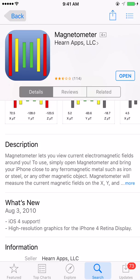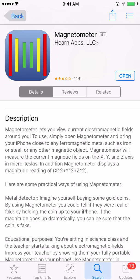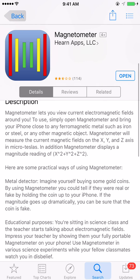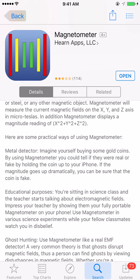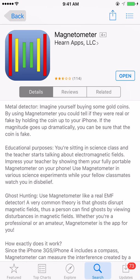This app lets you view the current electromagnetic fields around you. To use, simply open the app and bring your iPhone close to any ferromagnetic metals such as iron or steel or any magnetic object. The magnetometer will measure the current magnetic fields on the X, Y, and Z axis.